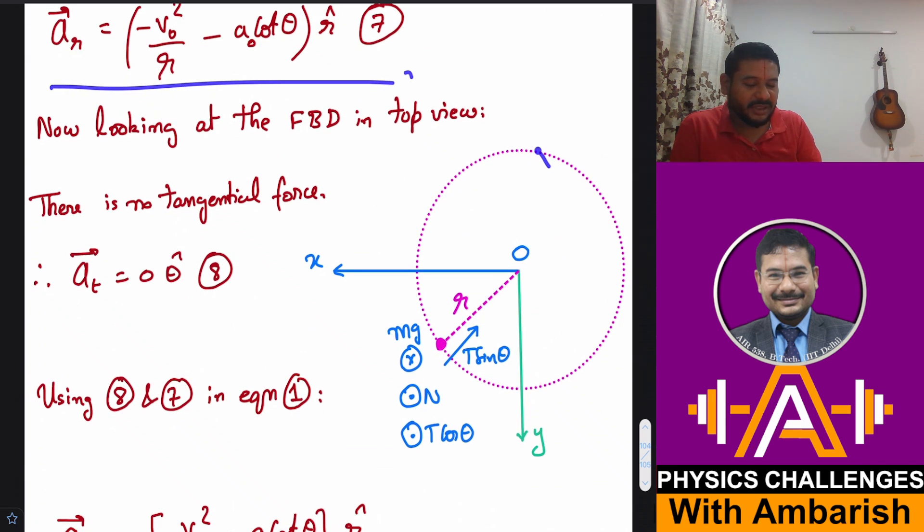Now if I look at the free body diagram in the top view, what forces are acting on it? So you know that T sin θ will be acting towards the center. And of course there is an mg acting downwards and there is normal reaction acting upwards in the top view, and there is a T cos θ acting upwards. So you can see that there is no force acting in the tangential direction perpendicular to the radius. There is absolutely no force, and since there is no force in the tangential direction, tangential acceleration must therefore be zero.